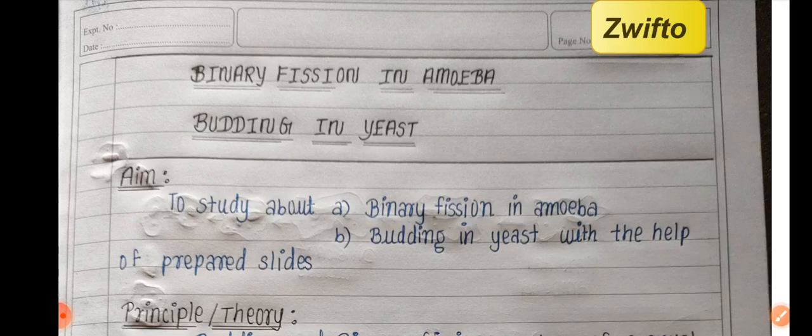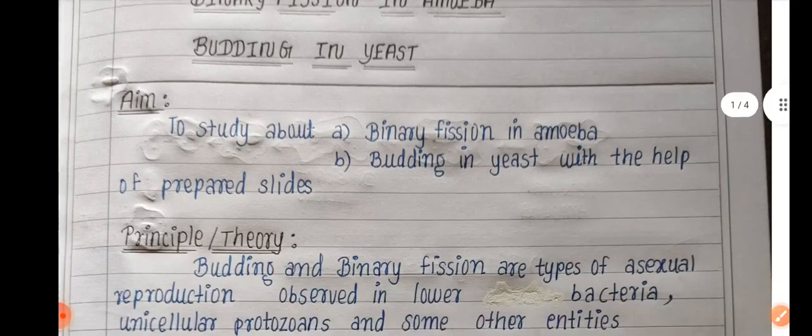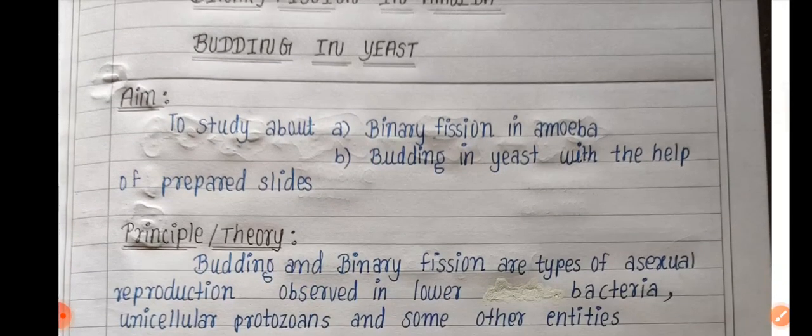First, write the title of the experiment: binary fission in amoeba and budding in yeast. Then write the aim. The aim is to know what you are going to study here with the help of prepared slides.